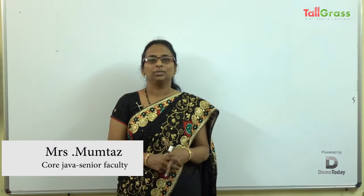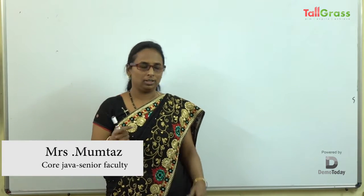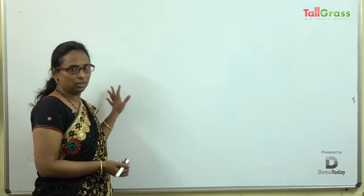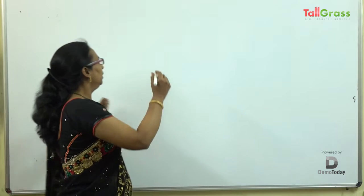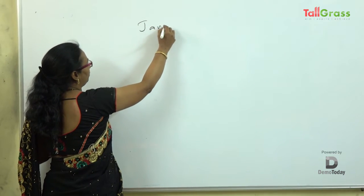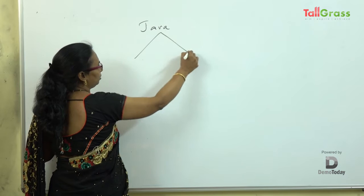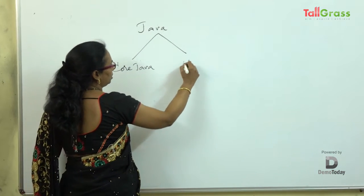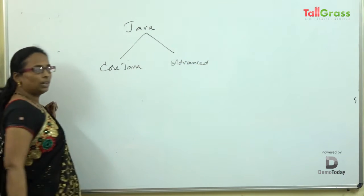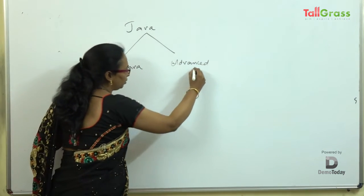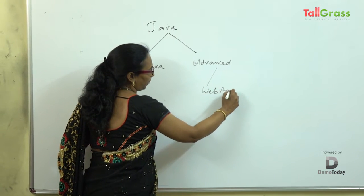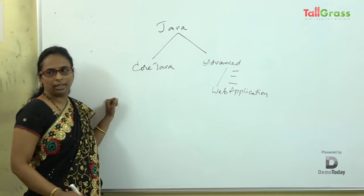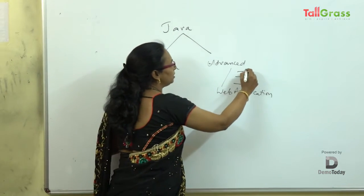I am working for Tallgrass. Let us talk about Java and in what way it is useful for you in your future endeavours. In Java, we basically go with two concepts: one is core and the other is advanced. Advanced is useful for you to develop web applications, and in advanced what we learn covers three basic areas: JDBC, servlets, and JSPs.